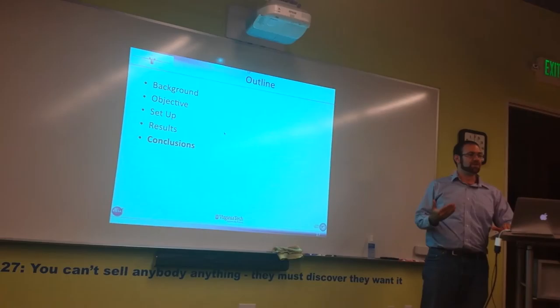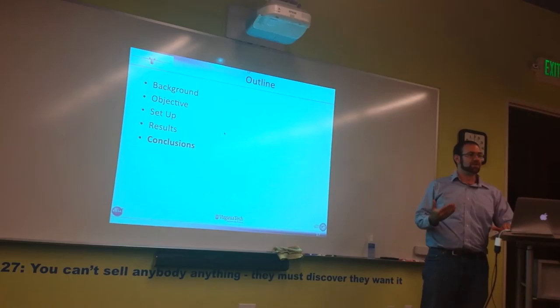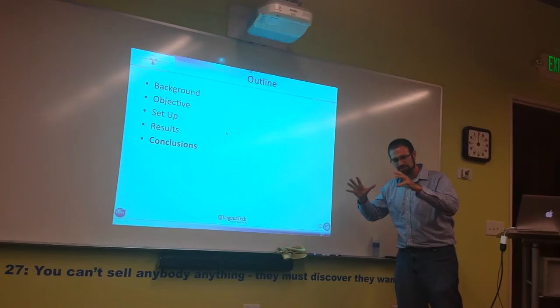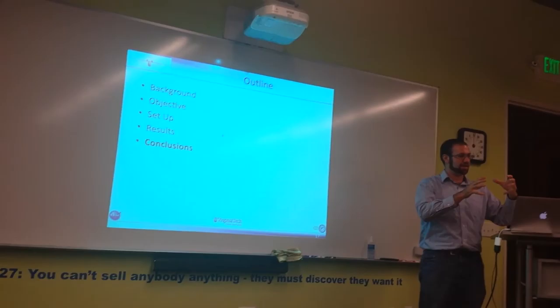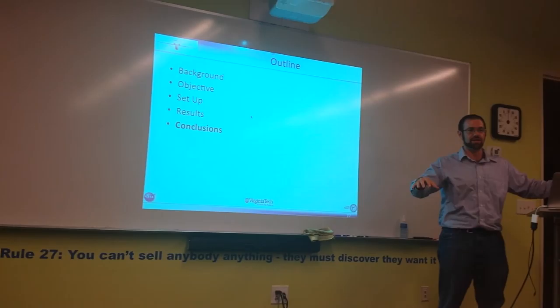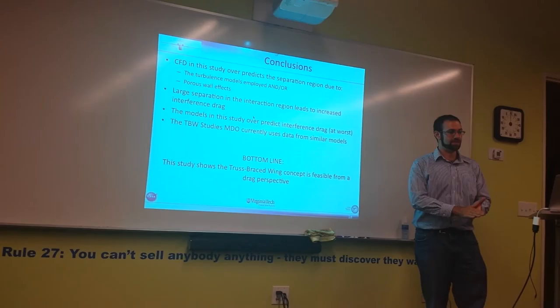So what can we conclude from this? Backing all of this out, we took a very simple experiment, a fin being varied up and down, and then we looked at that in a physical experiment and a computational experiment. And what we found was that the CFD, the computational experiment, over-predicts the separation in this region.